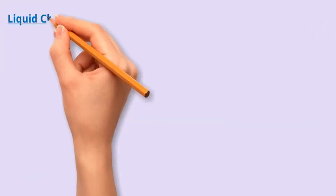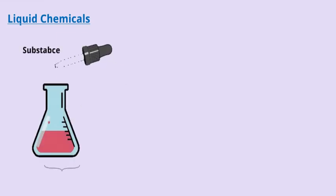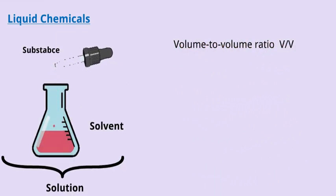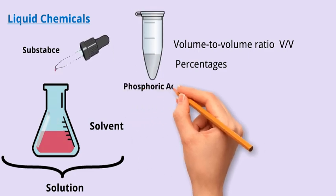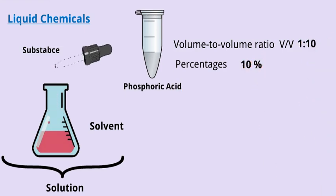When it comes to liquid chemicals, here we add a liquid chemical to a liquid solvent. So we often use volume to volume ratios, also known as V to V, where we use percentages. This tells us how much of a substance is in a solution compared to the total volume. For example, when I say this solution is 10% phosphoric acid, we have a 1 to 10 ratio. In other words, we have diluted the absolute phosphoric acid 10 times.